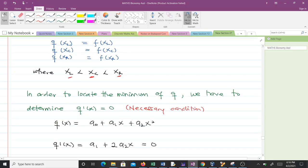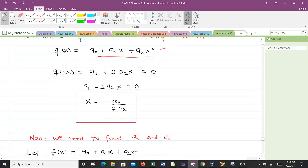In order to locate the minimum of q, we have to determine q'(x) = 0. That is a necessary condition when we want to optimize any single variable. So q(x) = a₀ + a₁x + a₂x². When we differentiate, q'(x) will be a₁ + 2a₂x = 0. Solving for x, we get x = -a₁/(2a₂).